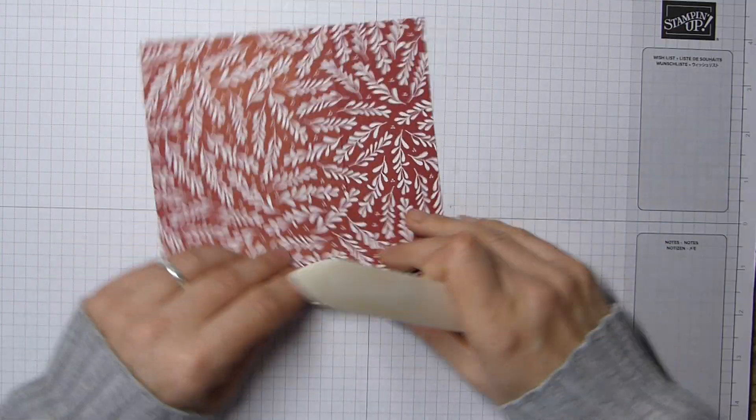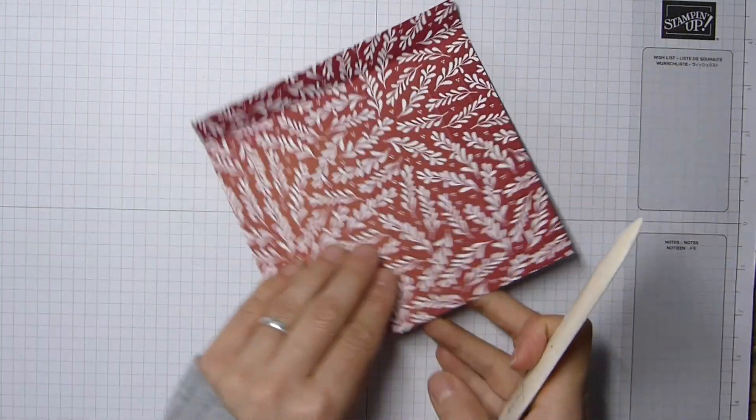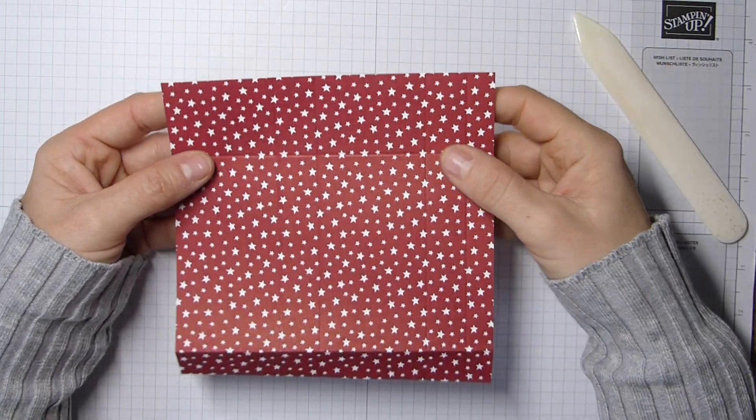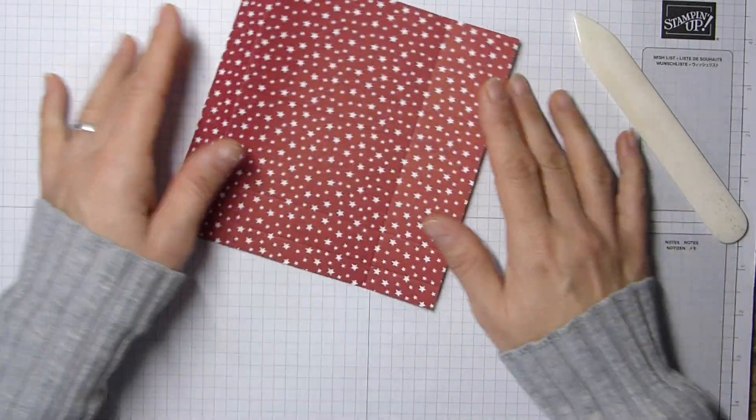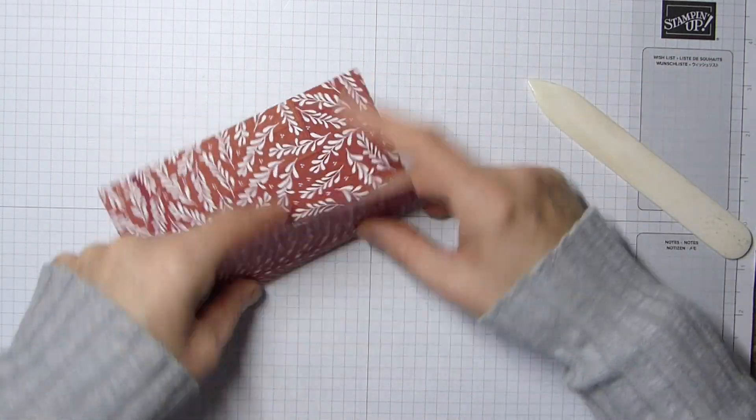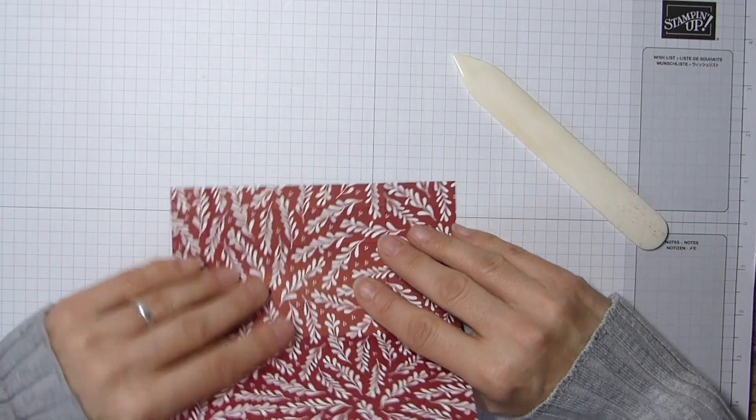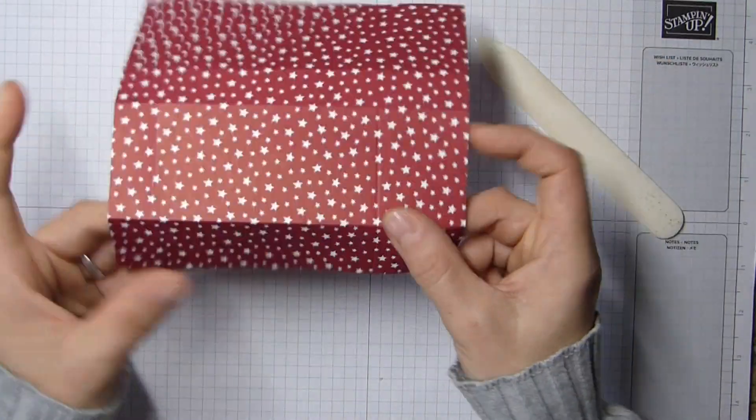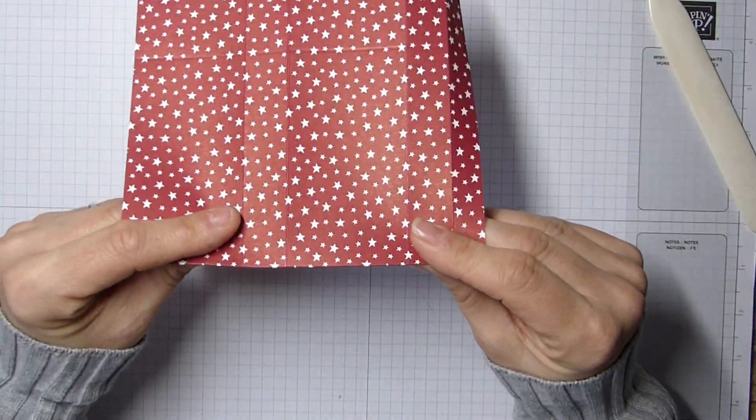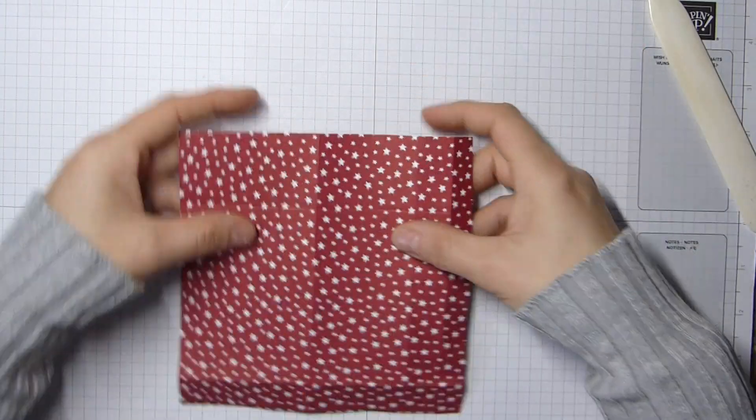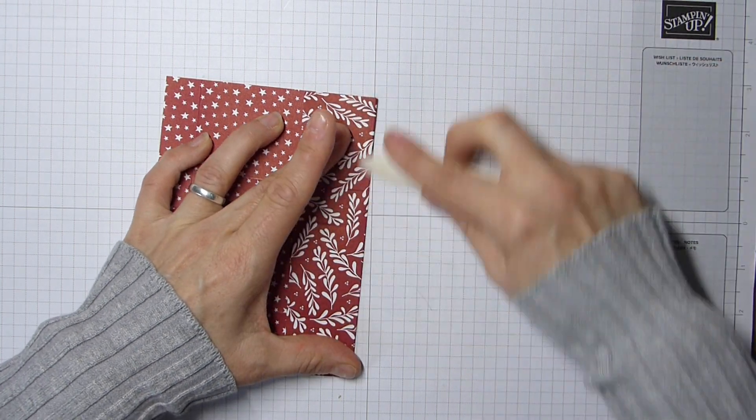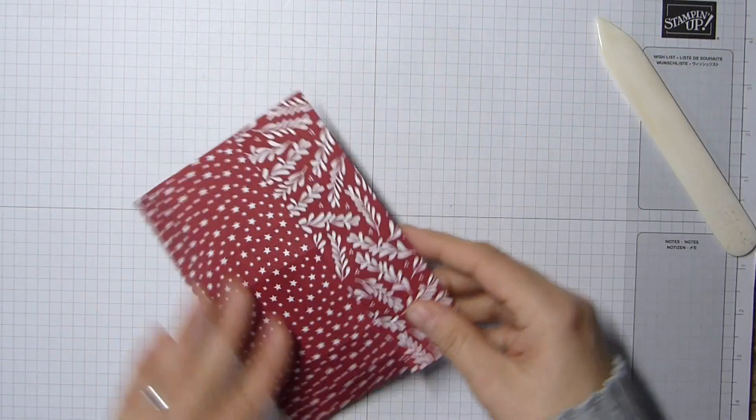Fold and burnish those lovely score lines. When you do the wide ones, so you've got all of these score lines that are clearly going to make your actual bag, when you do this one at the top which is the wider one, fold it the wrong way because this is where we're showing off the DSP.